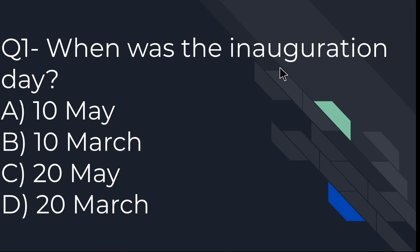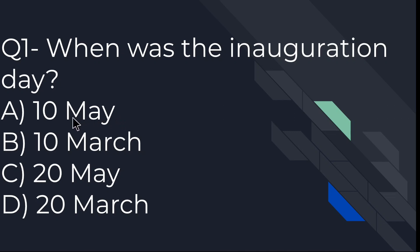When was the inauguration day? The options are: 10th May, 10th March, 20th May, or 20th March. It is given in the first line of the chapter — it was 10th May. So A is the right option. Let us move to the next question.